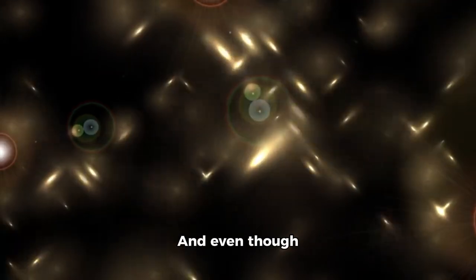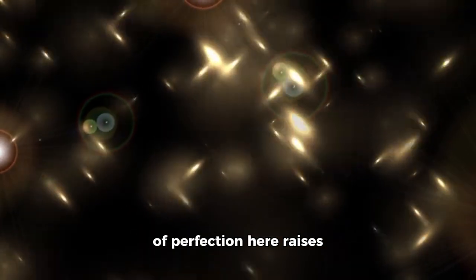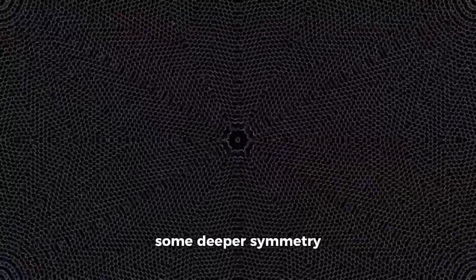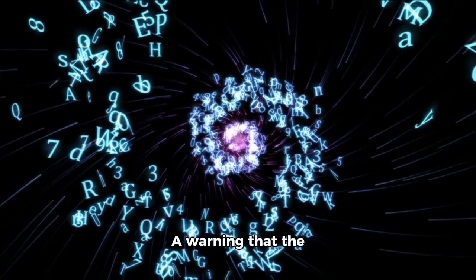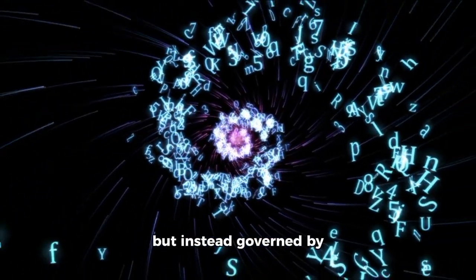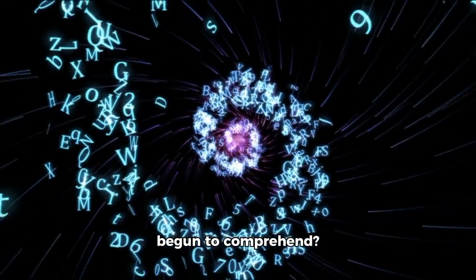And even though gravitational lensing is a known phenomenon, the level of perfection here raises more questions than answers. Could this be a hint of some deeper symmetry embedded into space itself? A warning that the universe isn't as chaotic as we assumed, but instead governed by geometry we have only begun to comprehend?